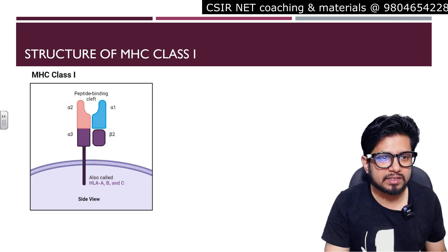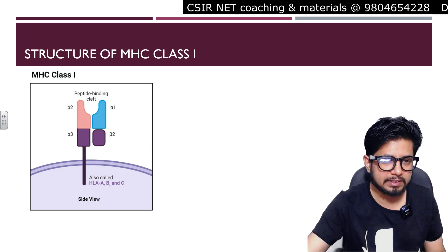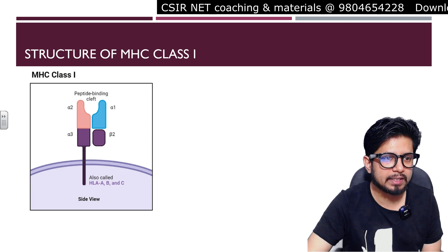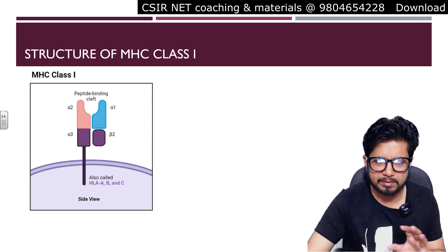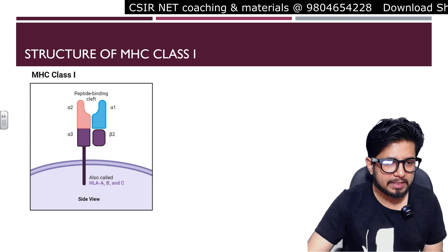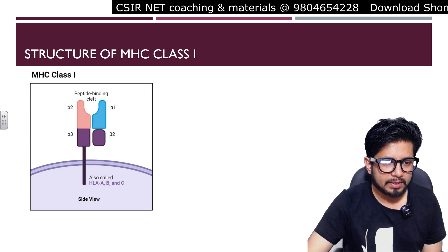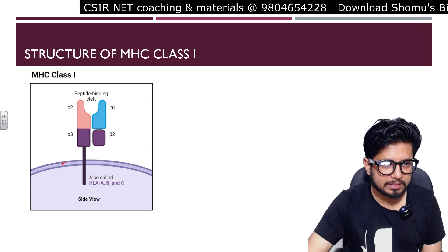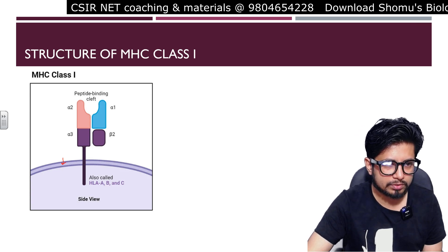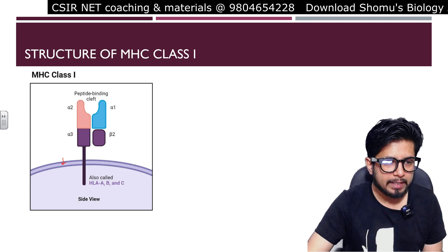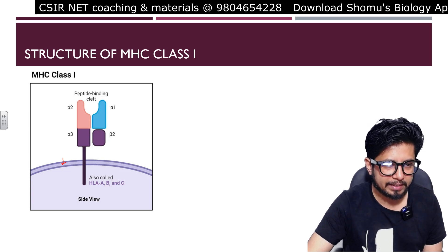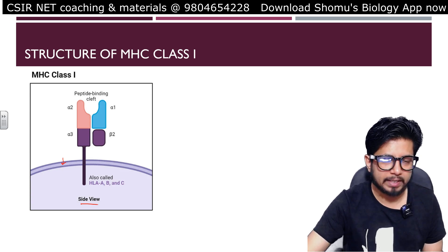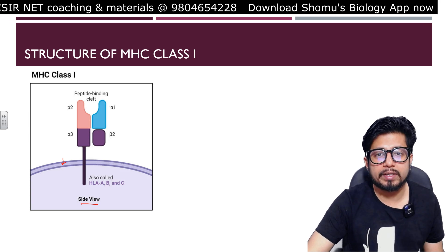Let us start with the structure of MHC class 1. Here you can clearly see the MHC class 1 structure — a simple, minimalistic drawing showing the cell membrane. This is the whole MHC class 1 component. You can see there is only one single anchorage to the cell membrane. This is the side view of MHC class 1.